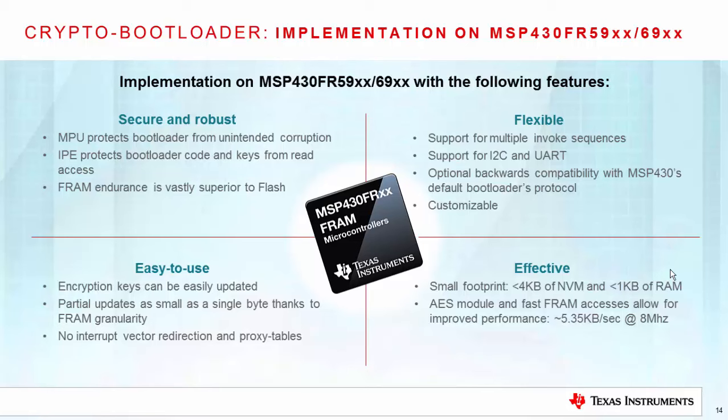Effectiveness. The current implementation of the bootloader takes less than 4 kilobytes of FRAM, including code and constants, and less than 1 kilobyte of RAM, including the stack. Finally, according to our bench test, the bootloader can update memory at speeds of around 5.35 kilobytes per second.